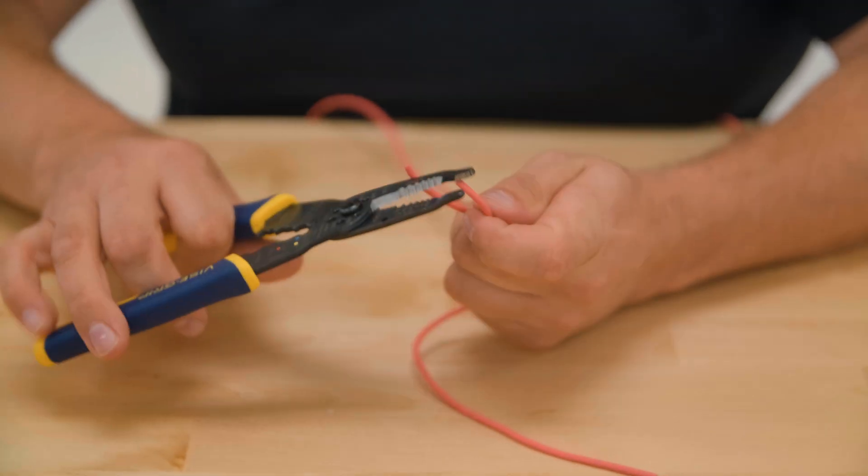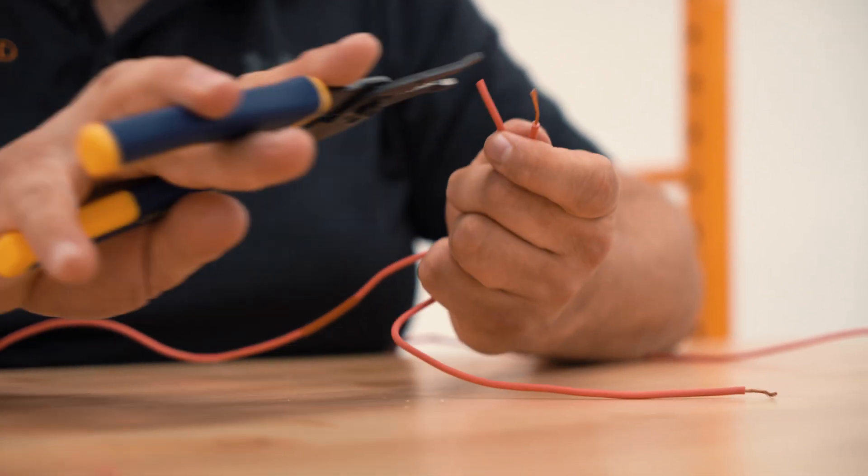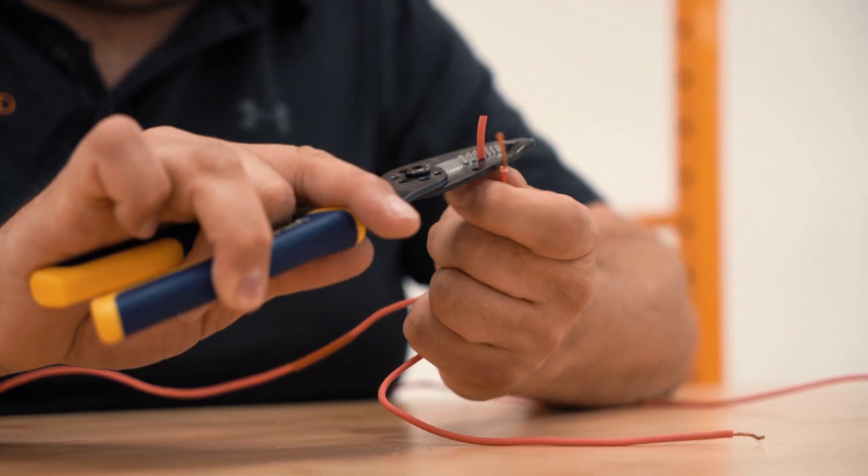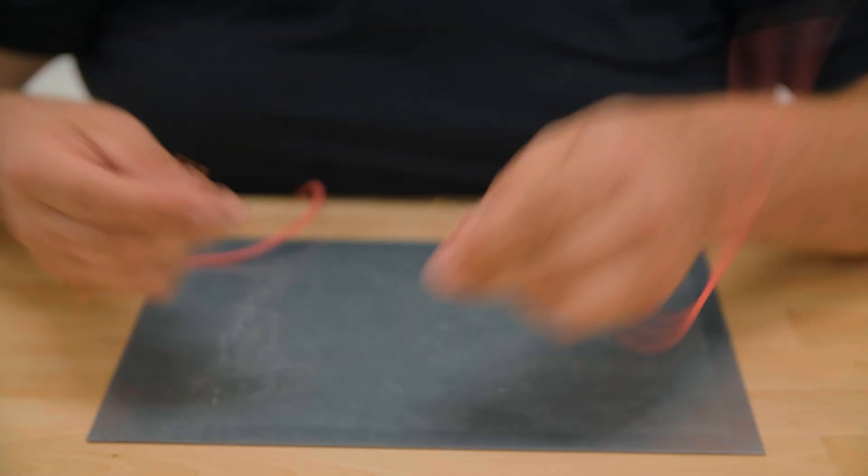Now we're going to strip our wires. I'm going to strip off about an inch on this wire and about an inch on this wire. I'm bringing our soldering pad right here, just a sheet of metal.